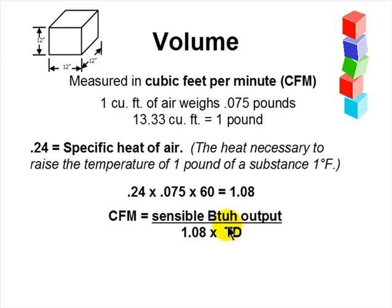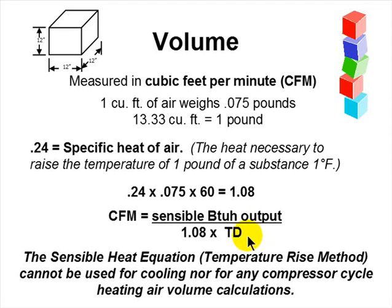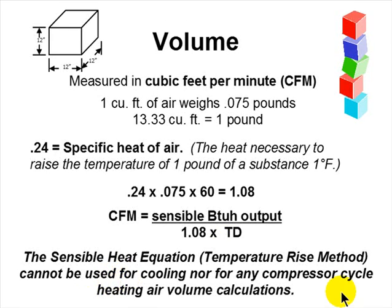To be correct, the temperature difference should be the difference between the air temperature in the duct and the air temperature in the room you're supplying it to — very often they work out to be similar. The sensible heat equation — the temperature rise method of determining volume — cannot be used for cooling, nor for any vapor compression cycle heating air volume calculation, because we need to separate sensible heat from latent heat.